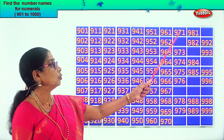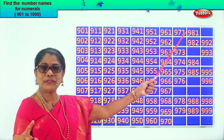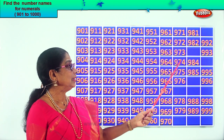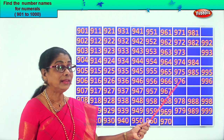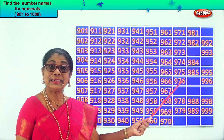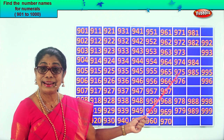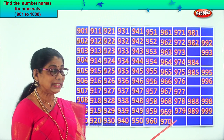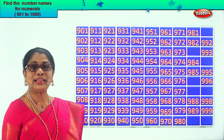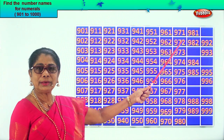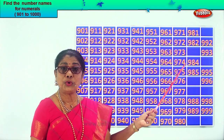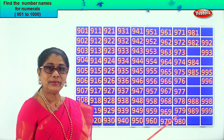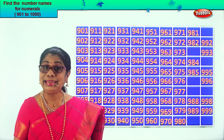After 70, 71. So we have here 971. After 71, 72. So the next missing number is 972, 973, 974, 975, 976. After 76, 77. So the next missing number is 977, 978, 979. After 79, 80. So the next missing number is 980. Let's say together: 971, 972, 973, 974, 975, 976, 977, 978, 979, 980.